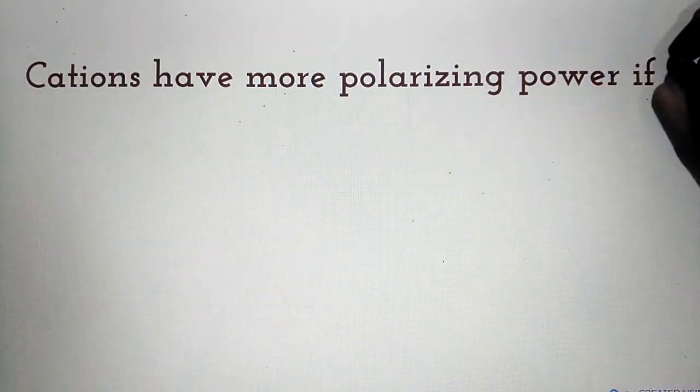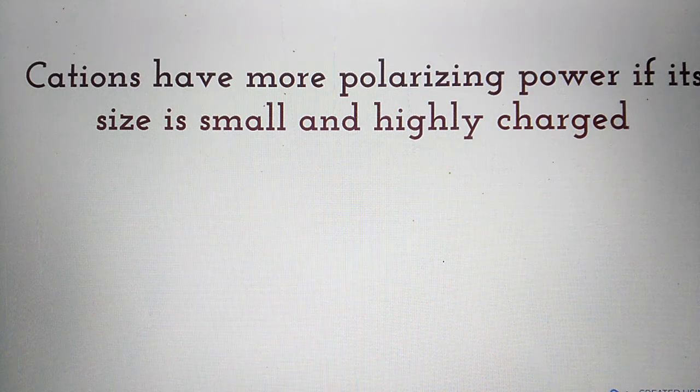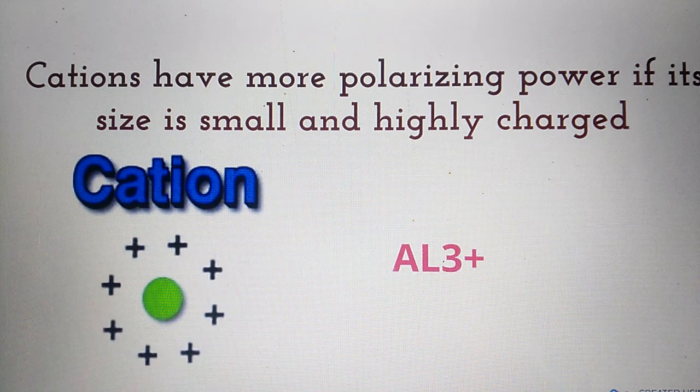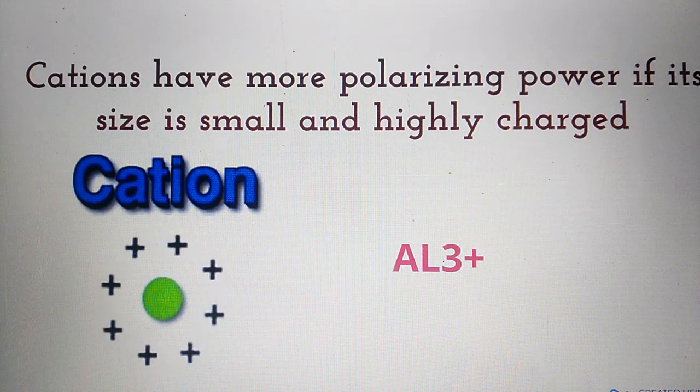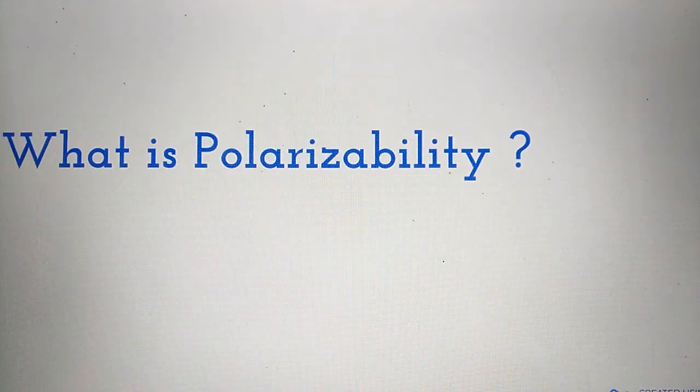A cation has more polarizing power if its size is small and highly charged. Down the group, metal ion size increases, so its polarizing power decreases.